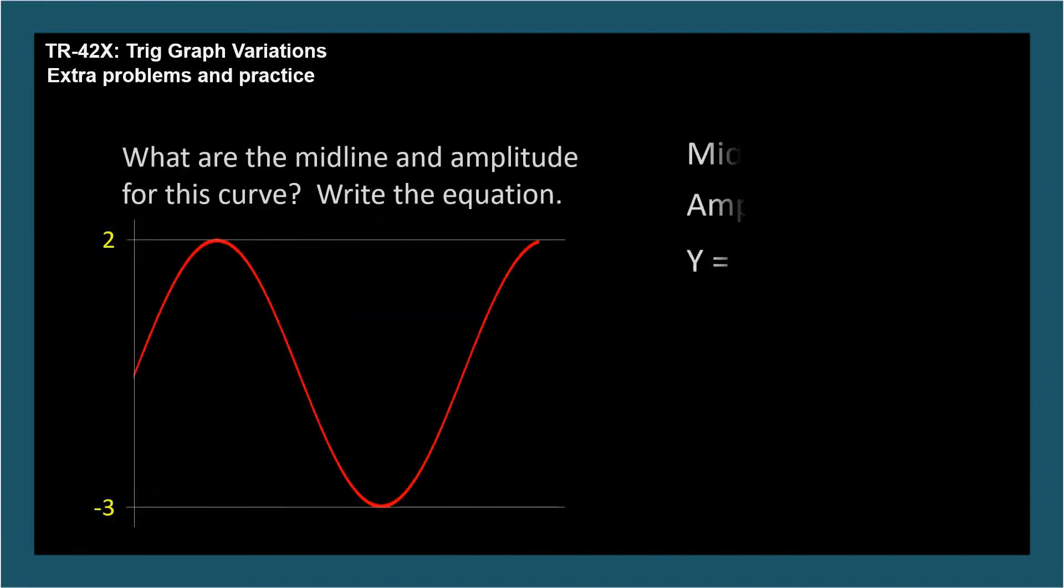What are the midline and amplitude for this curve? And write the equation. The midline is the average of 2 and negative 3, which is negative 0.5. By inspection, the amplitude is 2.5, and the curve is in the same direction as sine, so the A parameter is positive 2.5, and we have 2.5 sine theta minus 0.5.